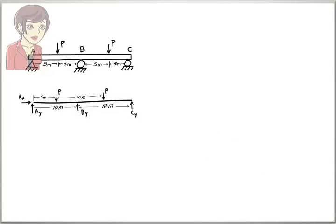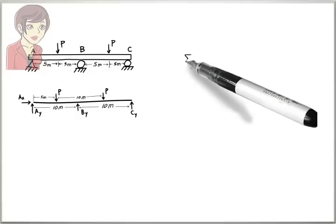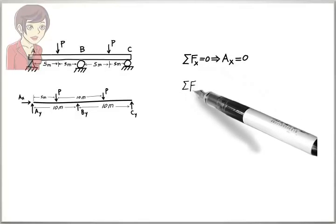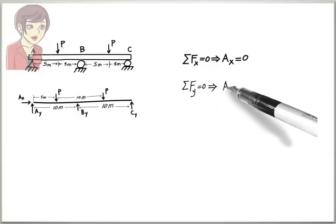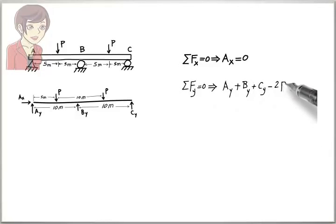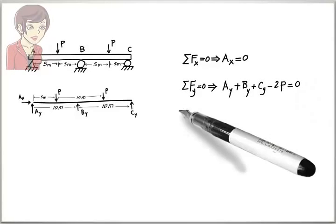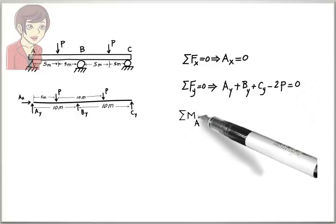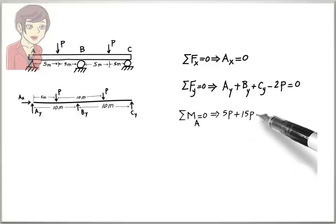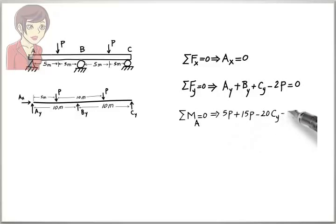Here, the equilibrium equations are AX equals zero. AY plus BY plus CY minus 2 times P equals zero. 5 times P plus 15 times P minus 20 times CY minus 10 times BY equals zero.